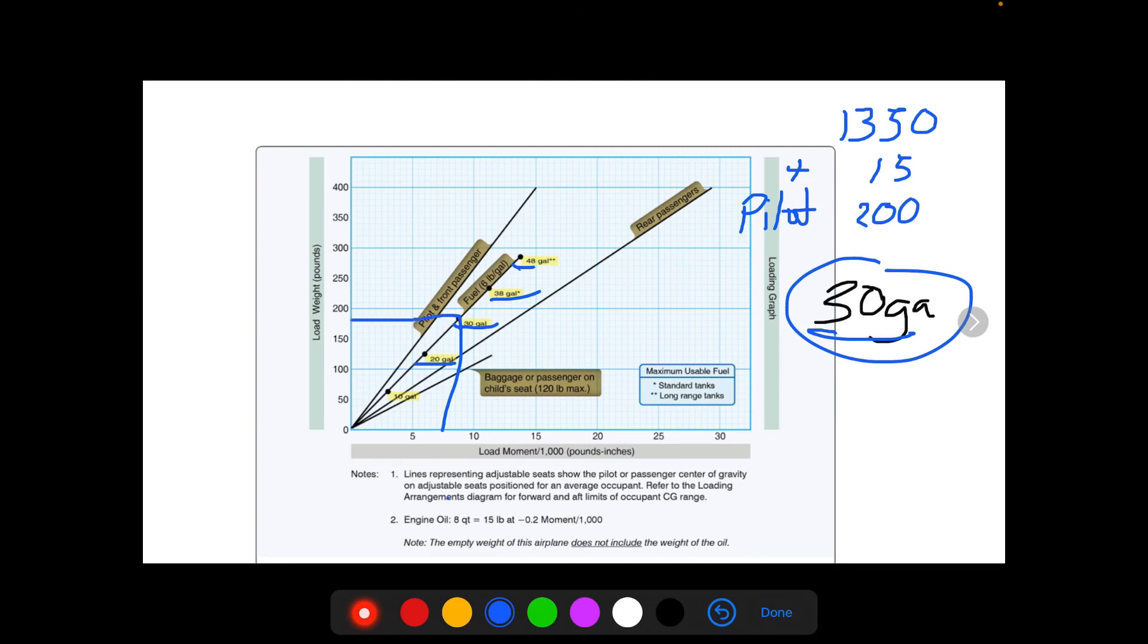Make sure you're not adding gallons as your weight. So you can either just look on the chart and do that, or you can just multiply the gallons by 6 pounds per gallon. So 30 times 6 is 180 pounds. Make sure you're not adding gallons to your weight. All right, that's it.